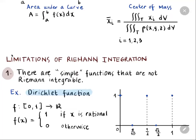As an example, consider the Dirichlet function on the closed interval [0, 1]. This function f has value 1 if x is rational, and value 0 if x is irrational — that is, if x is an irrational number in the closed interval [0, 1].